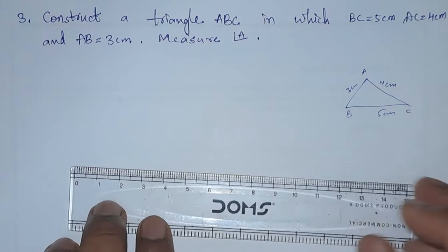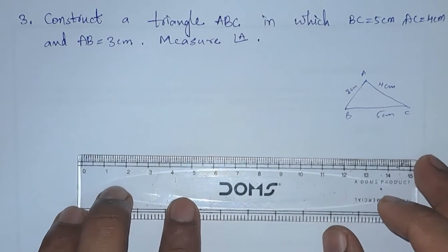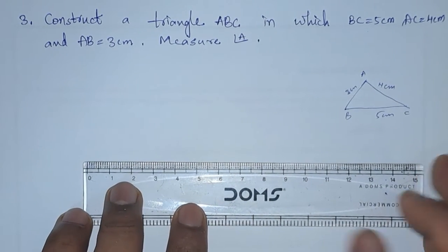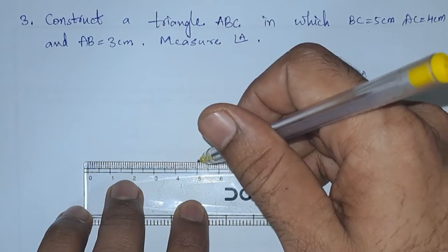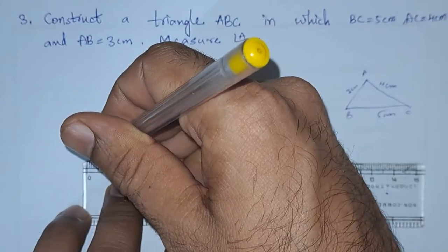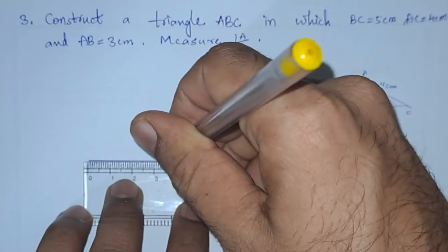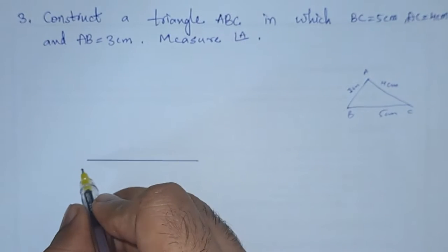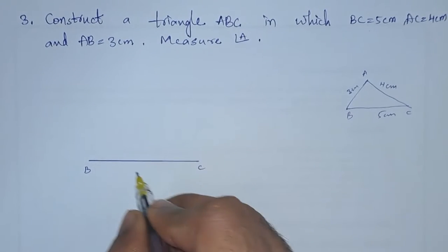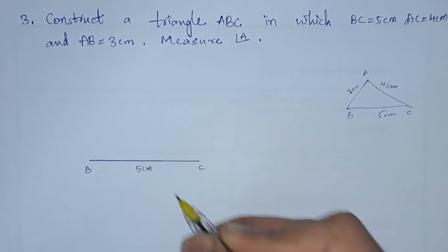Let us draw the triangle. They have given the base as 5 centimeters, so I am going to draw it 5 centimeters. This is BC, 5 centimeters.